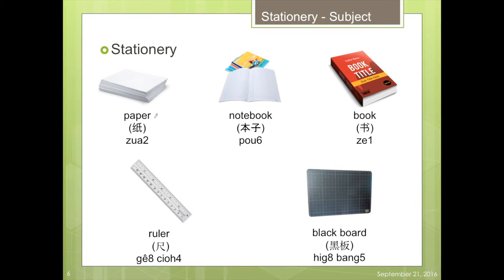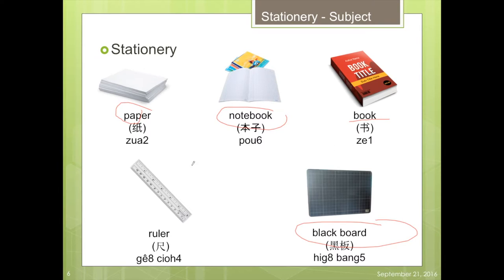To study, we need to write on something. For example, paper, notebook, or blackboard. We also need a book to read. And for support writing, we need a ruler. So paper is called Chua. Notebook is called Thổ. Book is called Chư. Ruler is called Kẹt-chịu. And blackboard is called Hạch-pang.